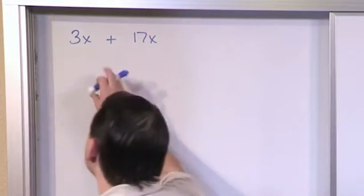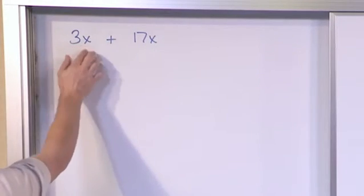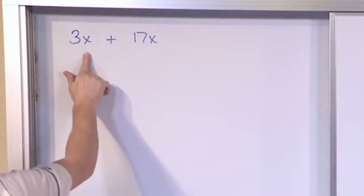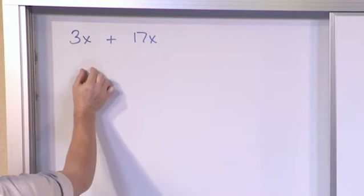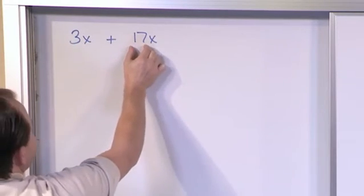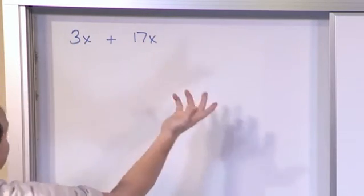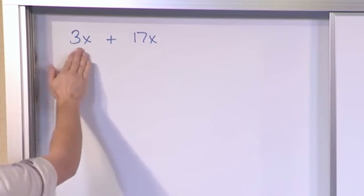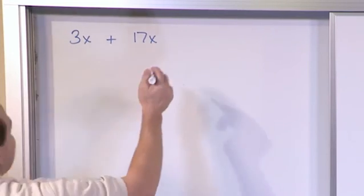So the same thing holds true here. You kind of think of this as like 3 pencils. Even though this is going to represent the number, it's a value of something. This is 17 times the same thing, basically. So you can sort of think of this as 3 pencils and 17 pencils to help you realize you can add them.